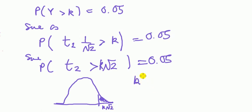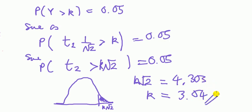Now appealing to the table, k over root 2 is equal to 4.303. You check that in the tables there. So rearranging for k, k is going to be about 3.04. Phew. Did you follow all that?